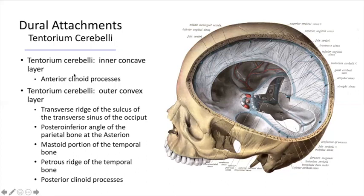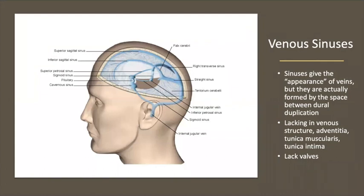These are attachments around the tentorium cerebelli — all anatomy points, so I'll go a little faster. The venous sinuses give the appearance of veins, but they are spaces. Since they are spaces and not veins, they don't have the ability for the same type of contraction as a vein, and they also lack valves. That's why if you stand on your head for a period of time, you'll start to feel a little strange because the blood does start to pool.